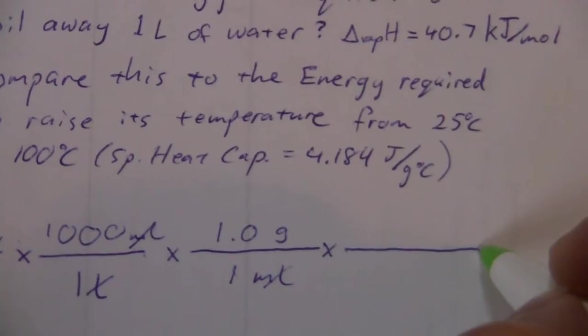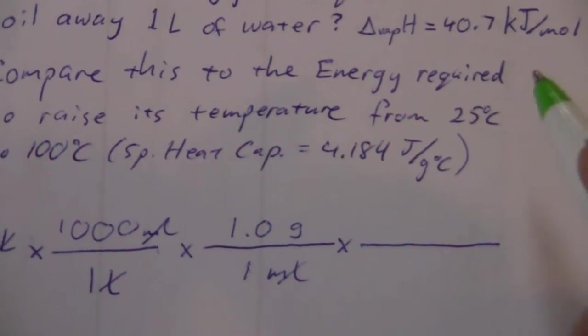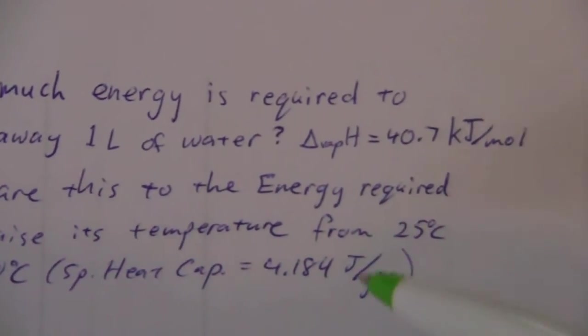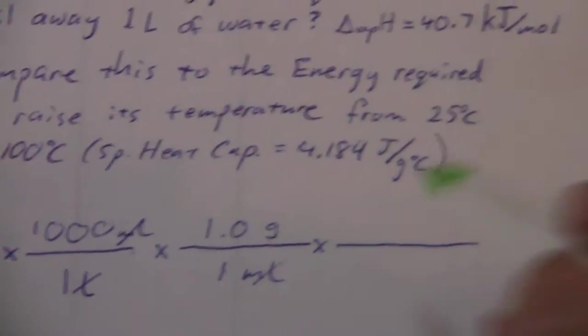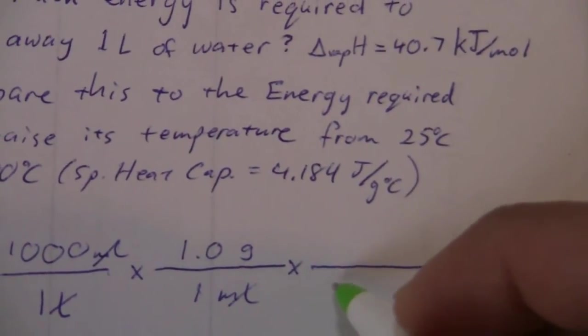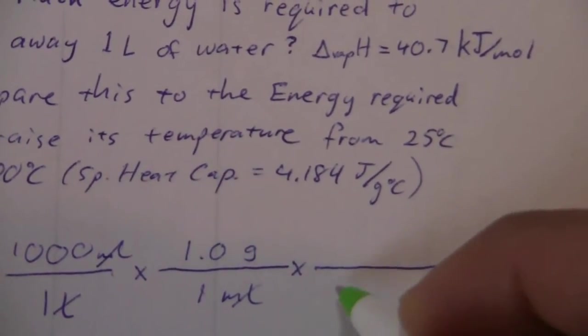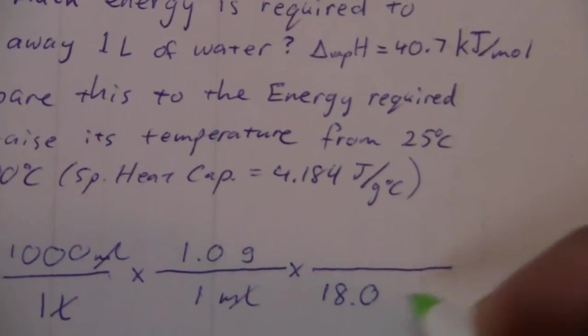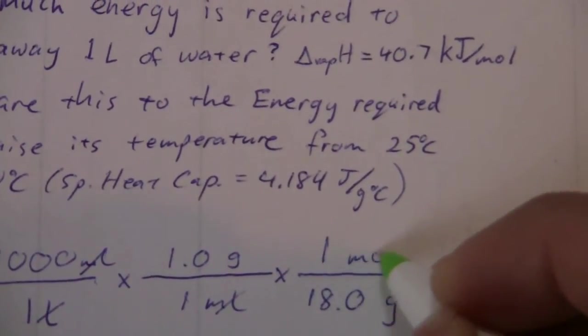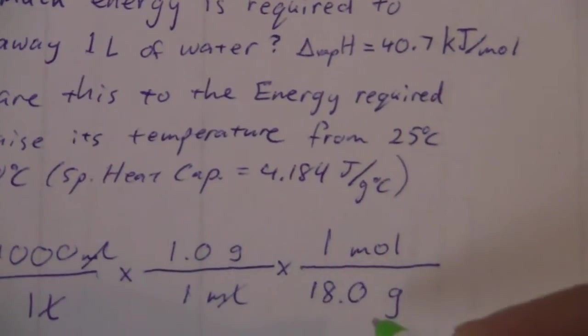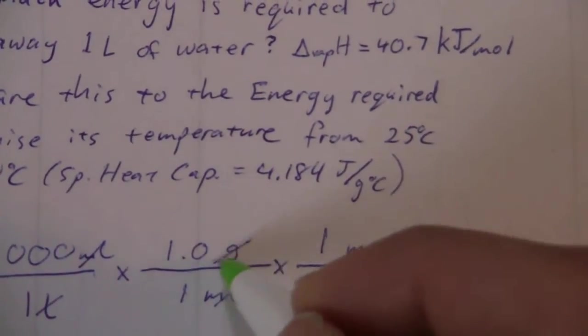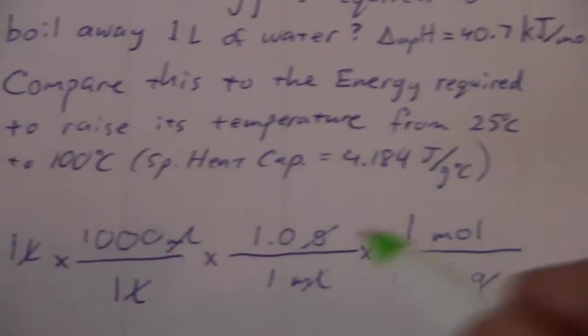We want to go to moles. And in order to go from grams to moles, of course, we need the molar mass. And for water, that is 18 grams per mole, arranged so that grams will cancel.